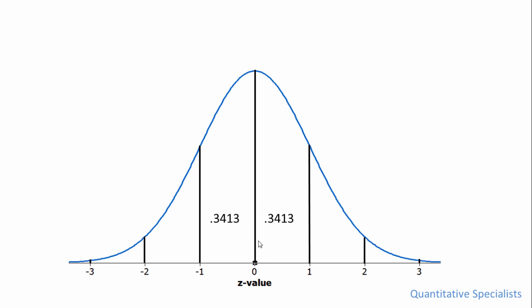Now often what you'll see is people will add together these two values to express the proportion of obtaining a value between negative one and positive one. And if we do that we can see that it's equal to 0.6826.